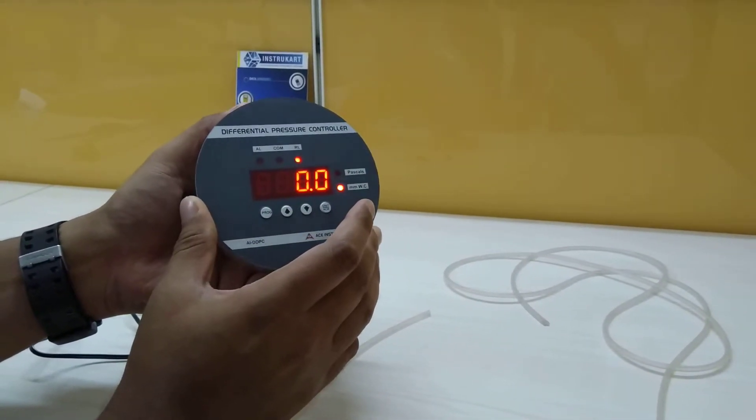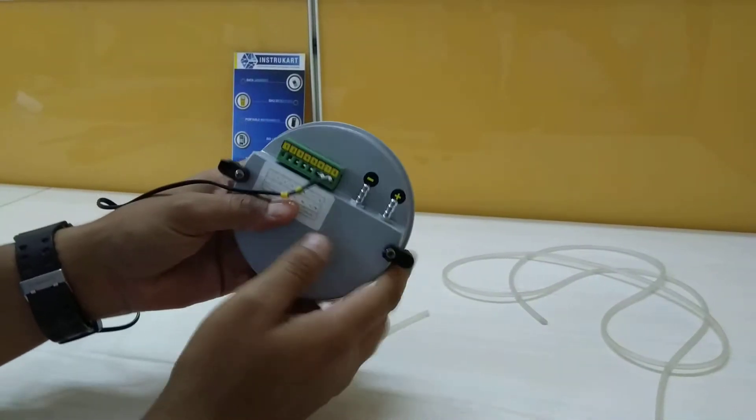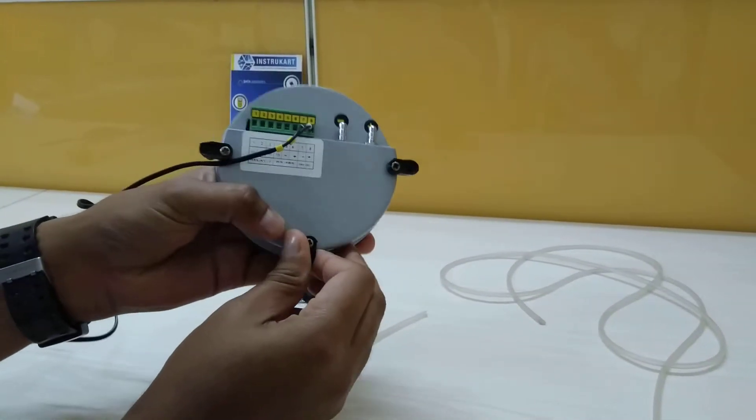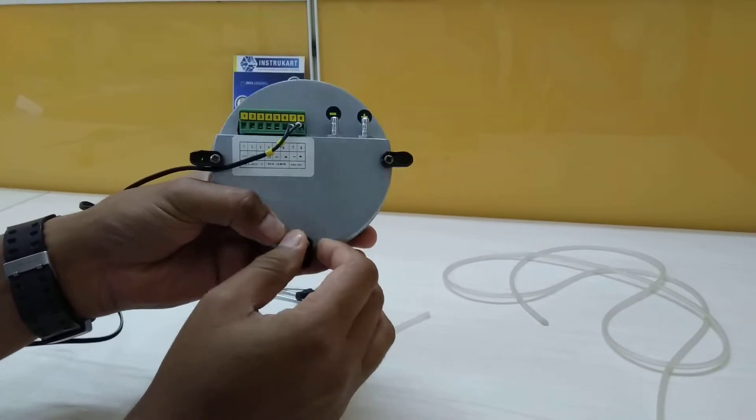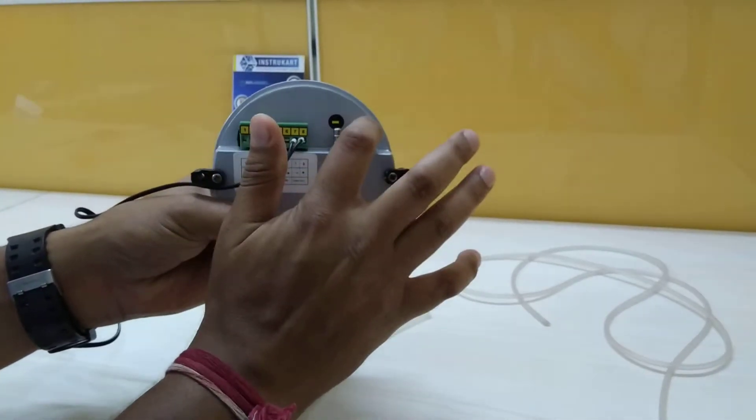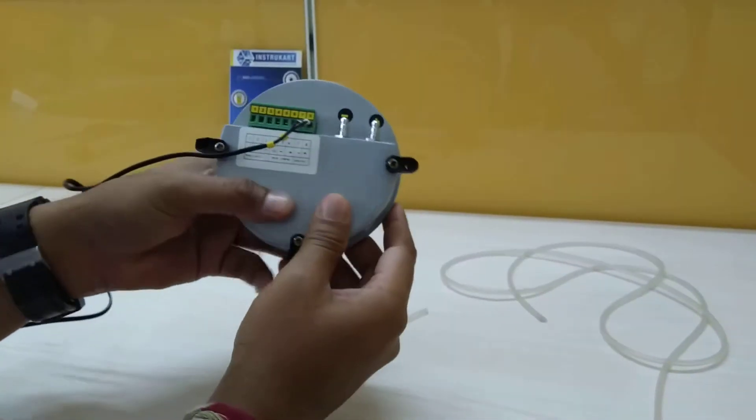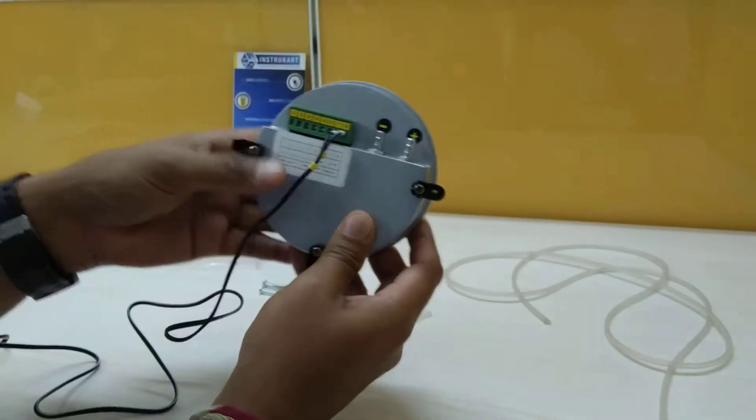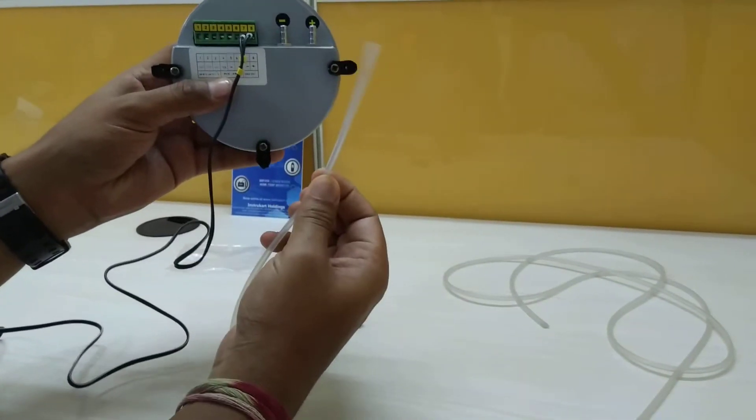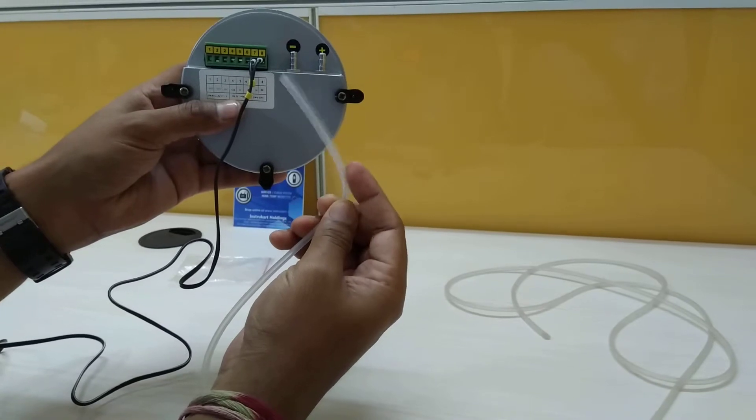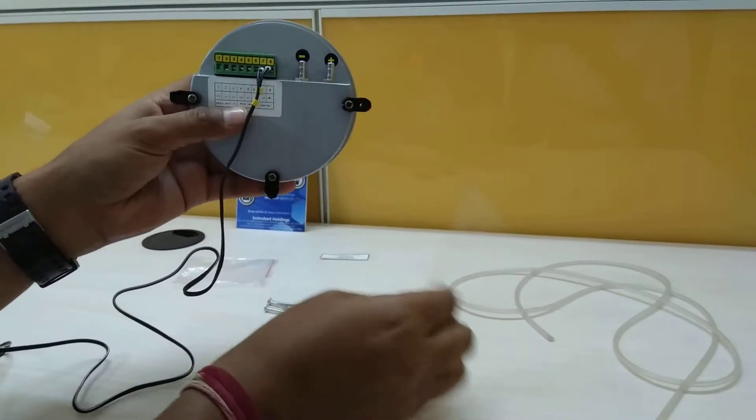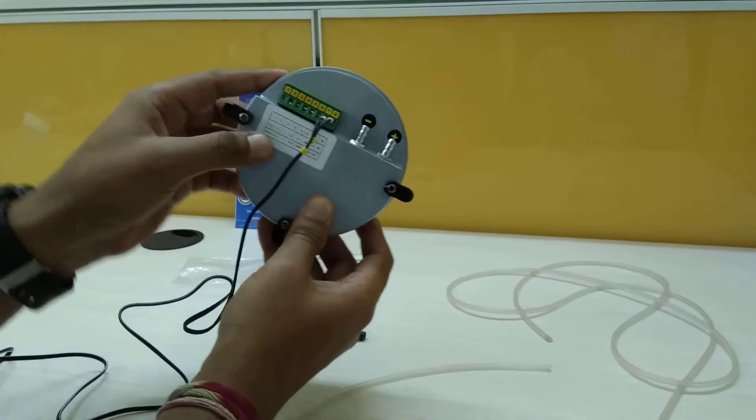The back has the same design as the digital pressure gauge. We have the negative and positive tubing provisions. A silicon tube like this comes along with the instrument.